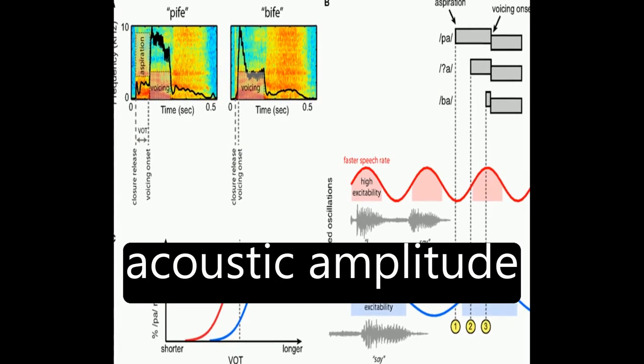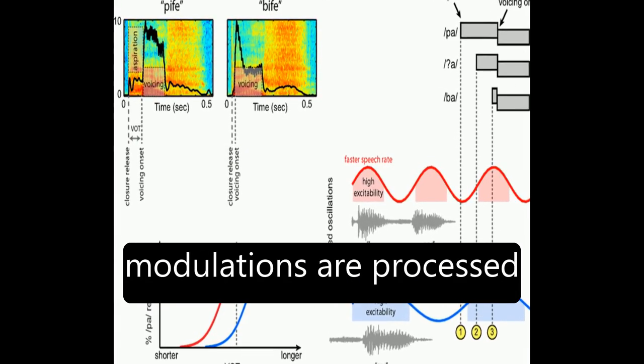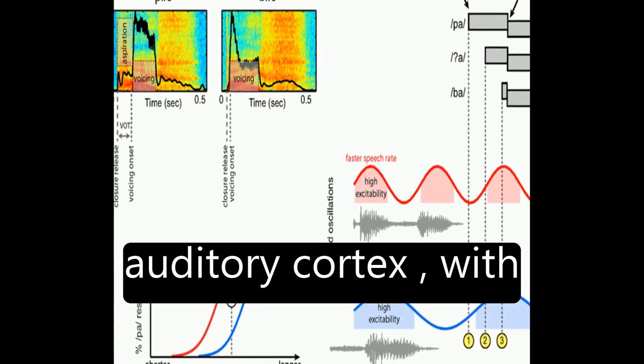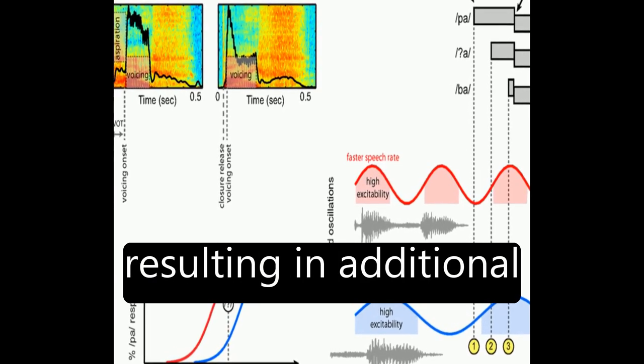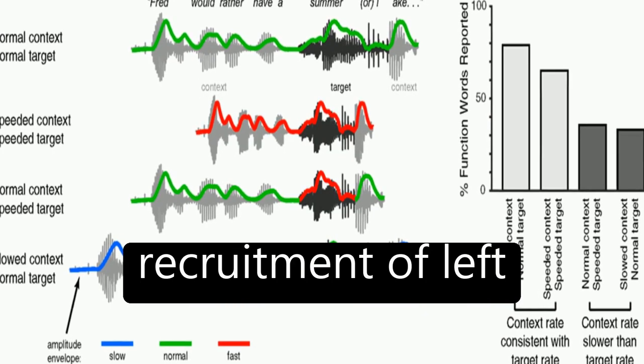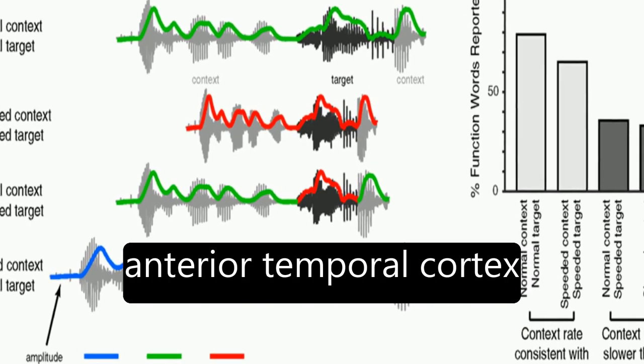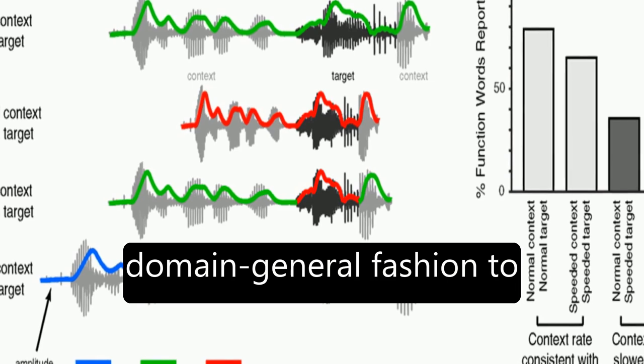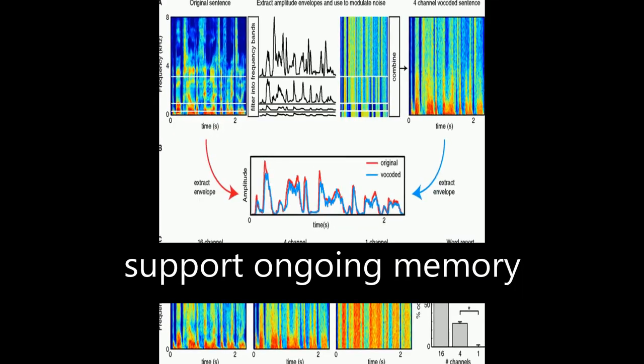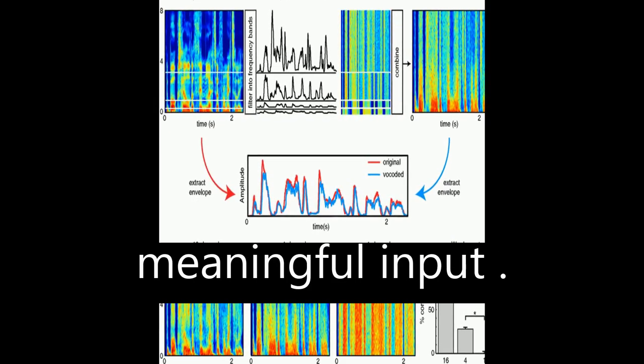Neuroanatomically, acoustic amplitude modulations are processed largely bilaterally in auditory cortex, with intelligible speech resulting in additional recruitment of left hemisphere regions, including lateral anterior temporal cortex, which functions in a domain-general fashion to support ongoing memory and integration of meaningful input.